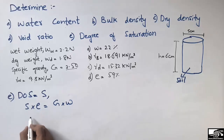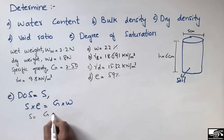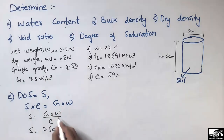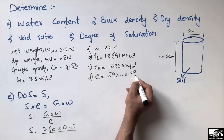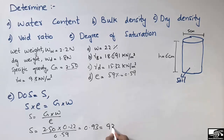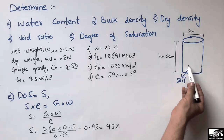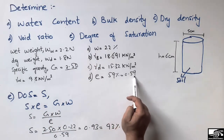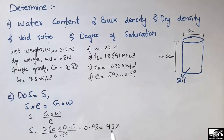Rearranging the formula: S equals G times w divided by e. Putting in the values: G is 2.5, water content w is 0.22, and void ratio e is 0.59. After calculating, we get 0.93, which multiplied by 100 gives a degree of saturation of 93 percent for this soil sample.